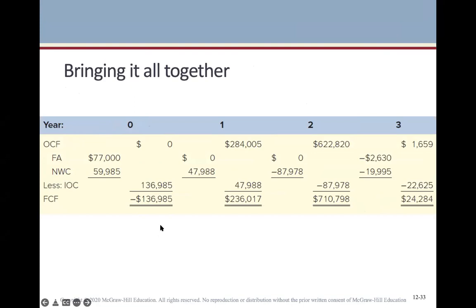Putting it all together by year: at time zero, we have fixed asset purchases and net working capital requirements, giving a negative free cash flow — which makes sense since you're making investments to start the project. In year one, free cash flow is $236,017; year two is $710,798; year three is $24,284.